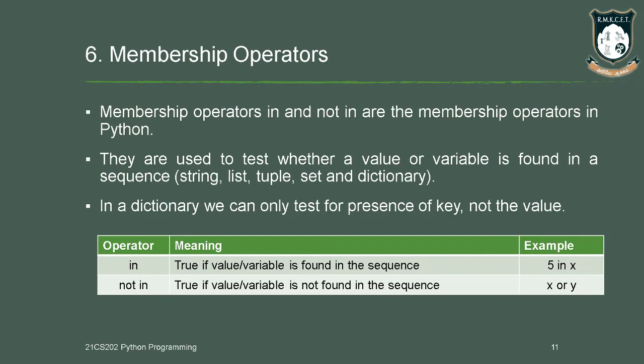The sixth operator is membership operator. The membership operator is used to check whether an operand is a member of something or whether it is present in a sequence. It is mainly used to test whether a value or variable is found in a sequence — that is, whether a value is found in a string, list, tuple, set, or dictionary.